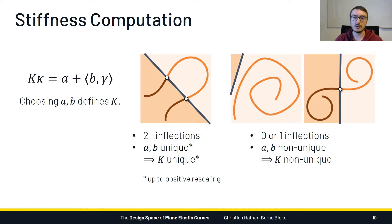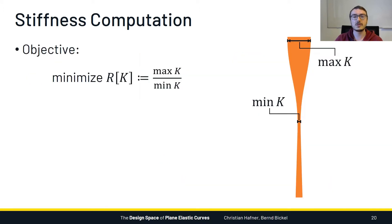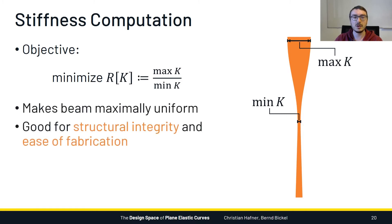But for curves that have either 0 or 1 inflections, the situation is more interesting, because the stiffness profile is not unique. This raises the natural question of whether there is a best choice for the stiffness profile. We would argue that the objective that best describes the qualities we are looking for in a physical beam is the max to min stiffness ratio of the beam. What we get by minimizing this objective is the beam that is maximally uniform among all possible choices for the given target curve. This promotes structural integrity and makes fabrication easier.